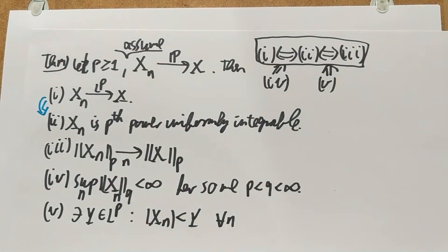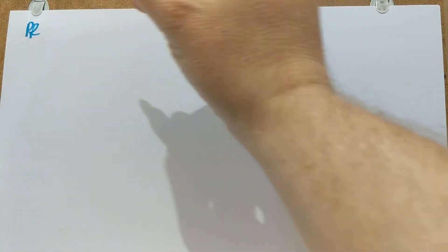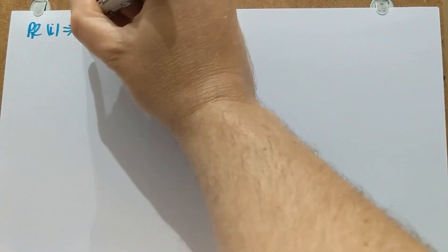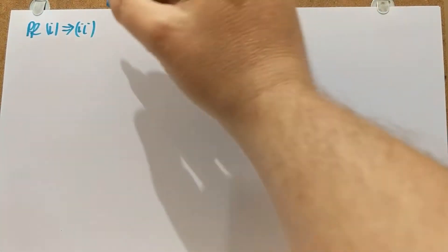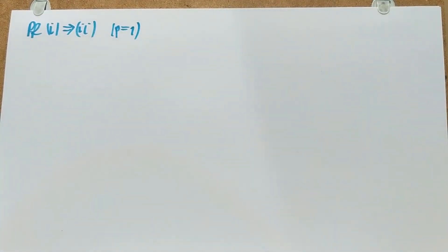I'm going to prove that if you have convergence in probability and LP convergence then you have uniform integrability. I'm going to do this proof for p equals one only — proving the big theorem's 'one implies two' statement. Anyone interested in other p's feel free to just work out the details.